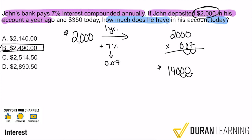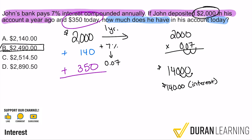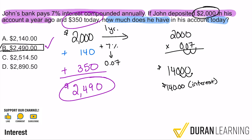The interest was $140 — that's the money John earned for keeping his money in the bank. So with that, we take the $2,000, add the $140 of interest he earned, and also add the $350 he deposited today. Don't let that last deposit fool you. Adding it all together: $2,000 + $140 + $350 = $2,490. That's why B is the answer.